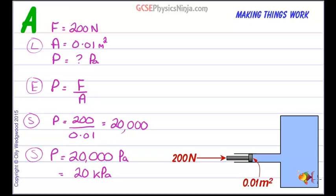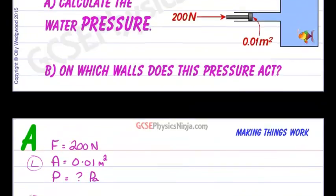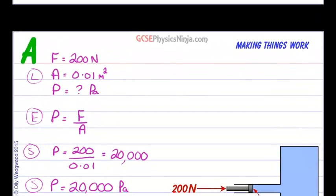I'm not sure this fish would appreciate that unless it's a deep sea fish where the pressure is very high. Anyhow, so what about the second question? On which walls does this pressure act?